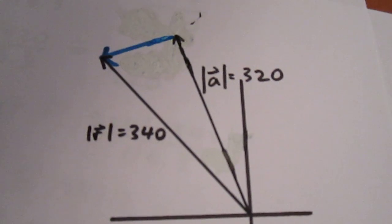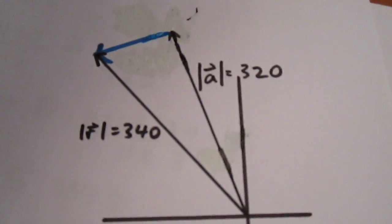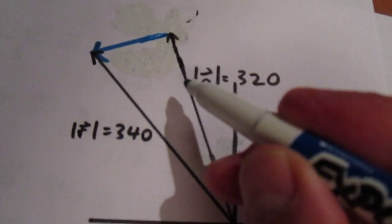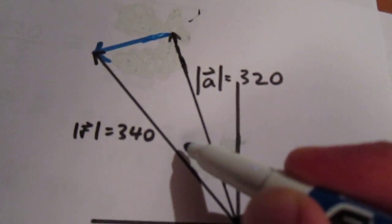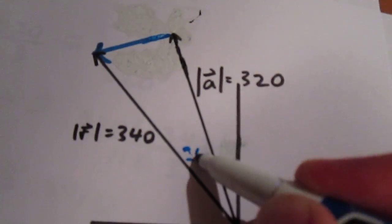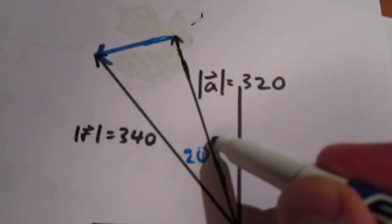So the first part is actually relatively straightforward, since this plane is traveling north 15 degrees west and this one's north 35 degrees west. This must be 20 degrees. So we put that in, 20 degrees.